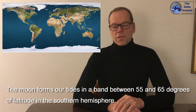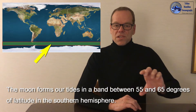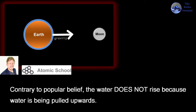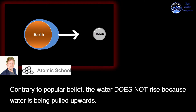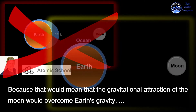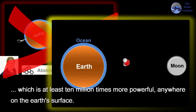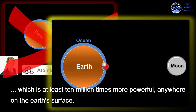The moon forms our tides in a band between 55 and 65 degrees of latitude in the southern hemisphere. Contrary to popular belief, the water doesn't rise because water is being pulled upwards, because that would mean that the gravitational attraction of the moon would overcome Earth's gravity, which is at least 10 million times more powerful anywhere on the Earth's surface.